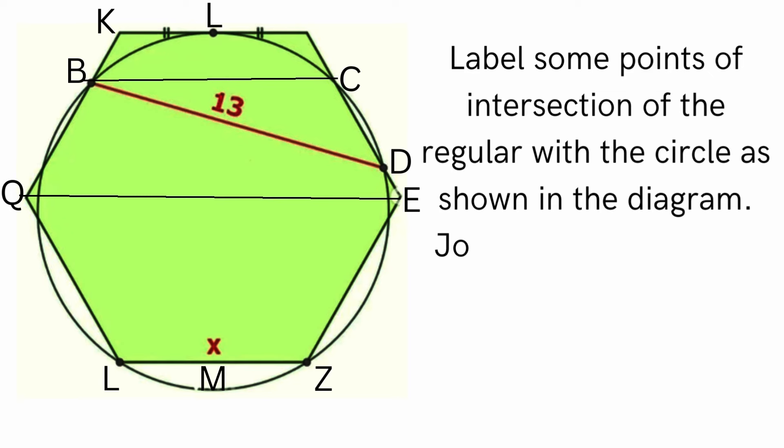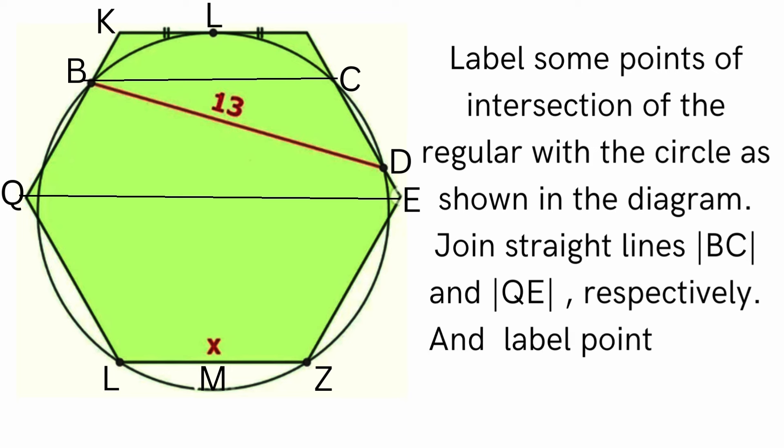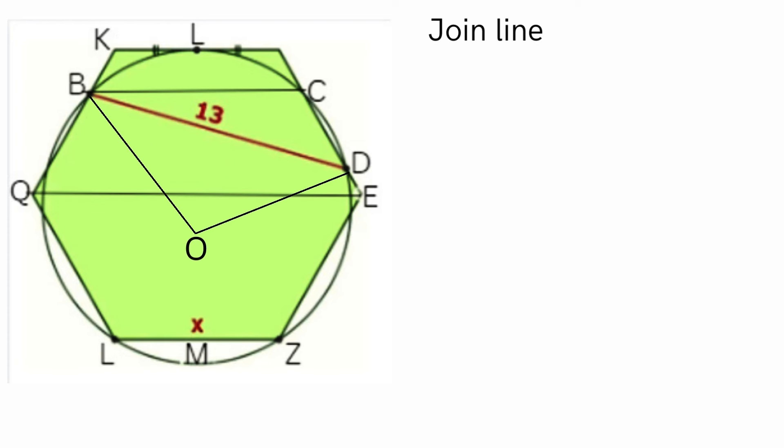Join straight lines BC and QE respectively and label point M the midpoint of line LZ. Join line BO equals DO equals radius R of the circle.